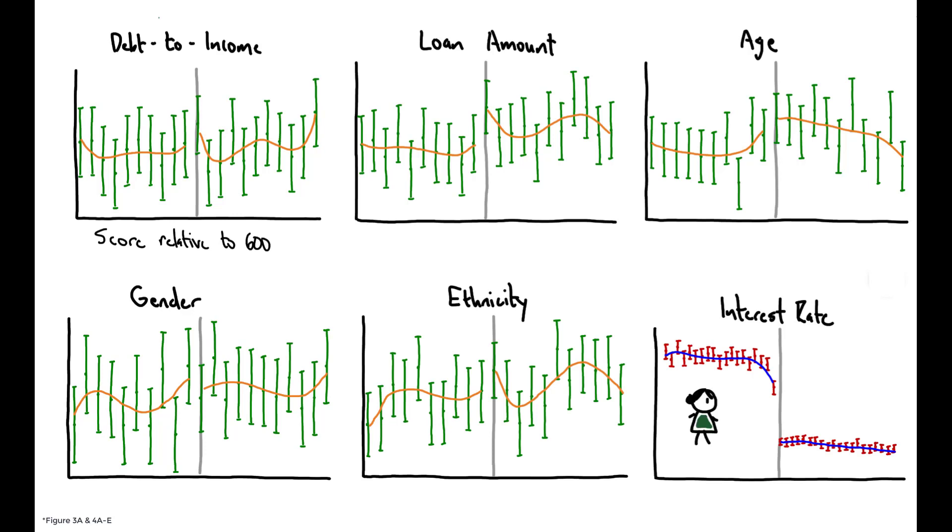Despite being very similar borrowers, those on either side of the credit score threshold receive very different interest rates purely because of these arbitrary pricing rules.